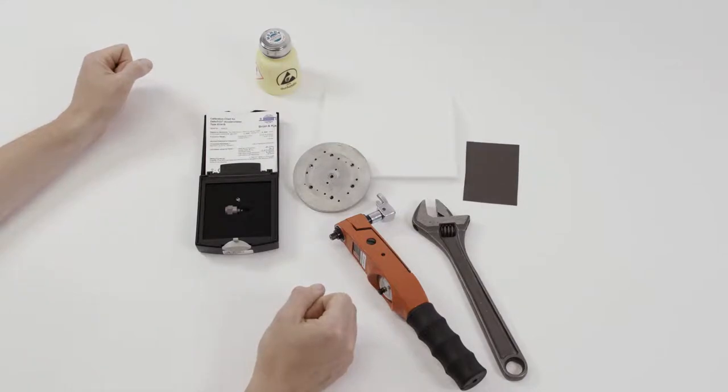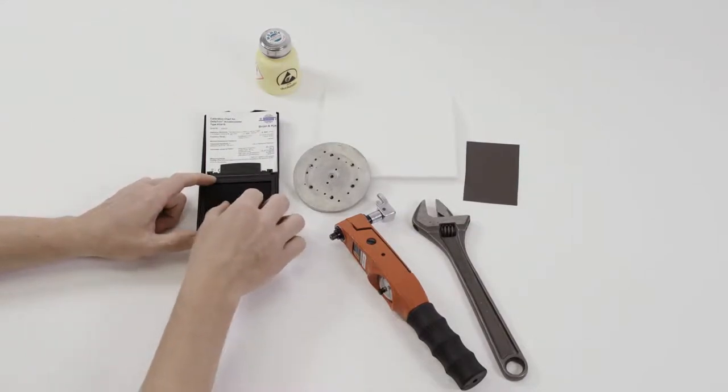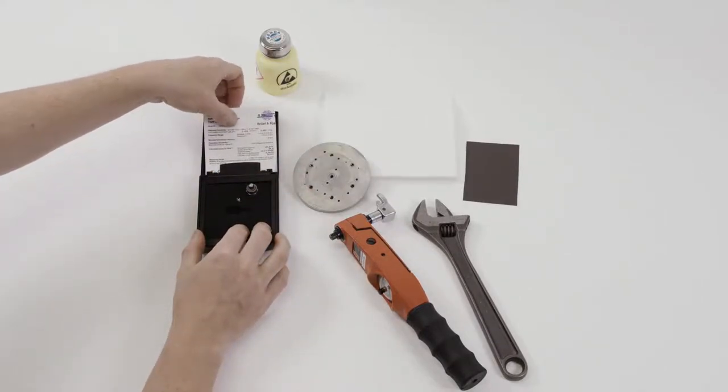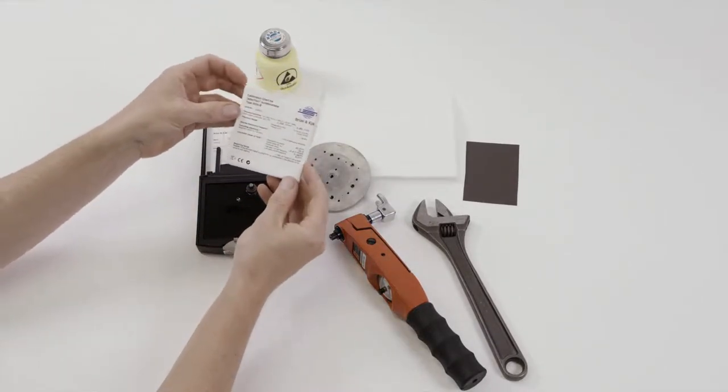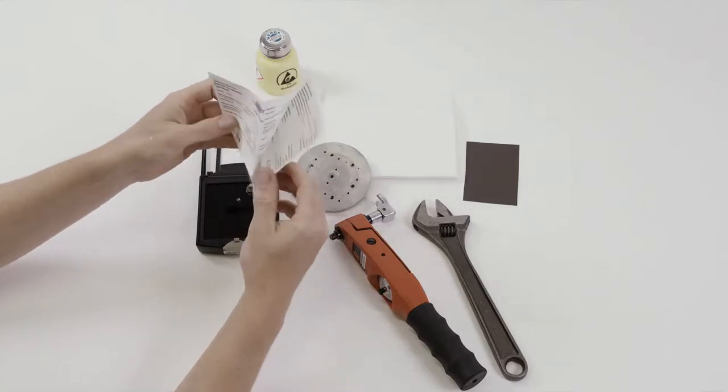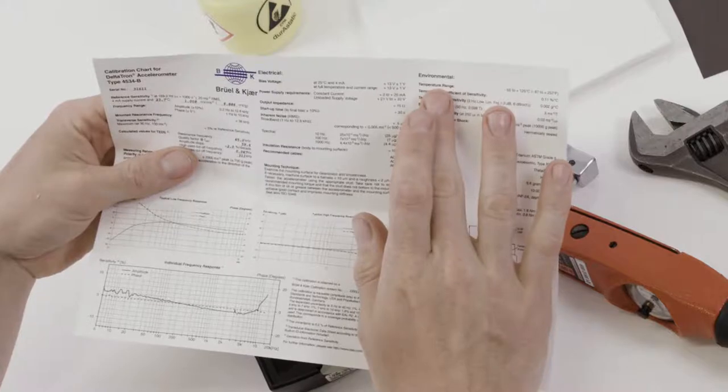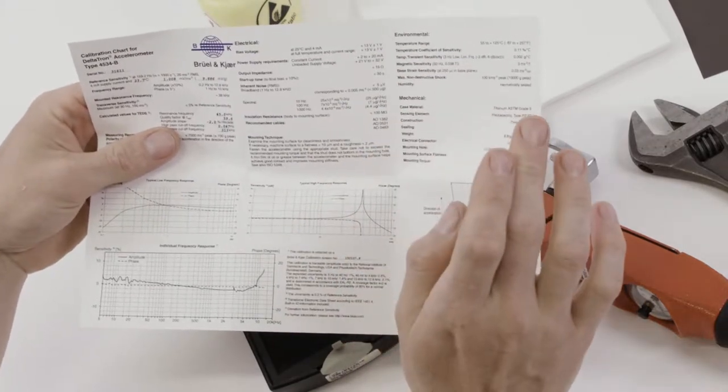In this video we will look at proper handling of accelerometers. Accelerometers are supplied from Brüel & Kjær with calibration charts, and on the calibration chart you will find specifications for proper environmental and mechanical handling.